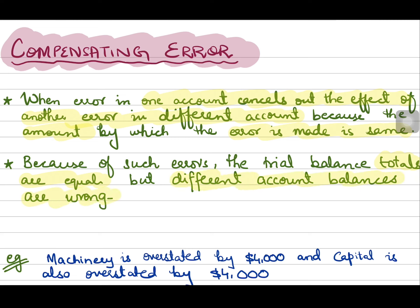Let's understand this through an example. Machinery is a non-current asset and right now it is overstated by four thousand dollars. Capital is also overstated by four thousand dollars.